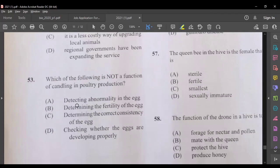Question 53, which of the following is not a function of candling in poultry production? Candling is when you pass light to an egg. Detecting abnormality in the egg, that should be a function. Determining the fertility of the egg, you perform candling. Determining the correct consistency of the egg, or checking whether the eggs are developing properly. I think the best answer here would be C, determining the correct consistency of the egg, you can't really determine that by candling.